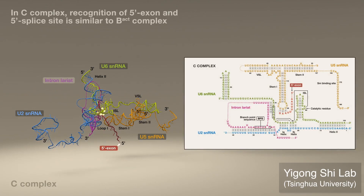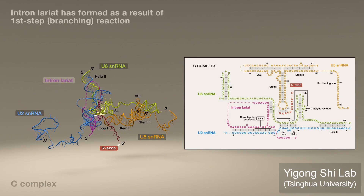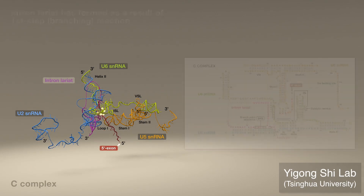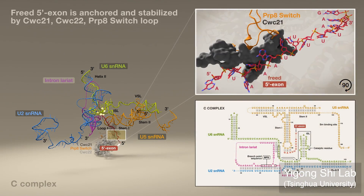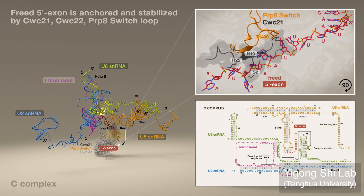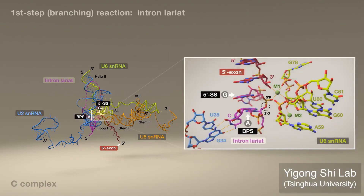In the C-complex, pre-mRNA recognition is similar to B-ACT. The intron lariat has formed as a result of the first step reaction, while the freed 5' exon is anchored and stabilized by CWC21, CWC22, and the PRP8 switch loop. In the lariat, the BPS 2'-oxygen is seen joined to the 5' end phosphate of the 5' splice site.